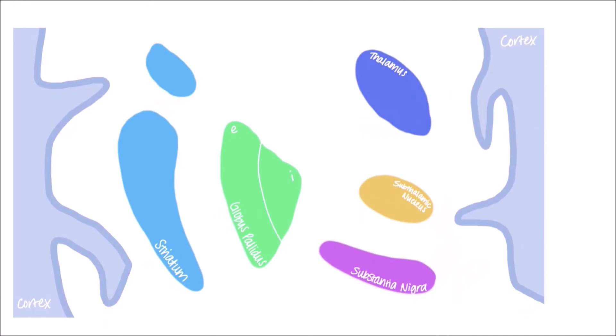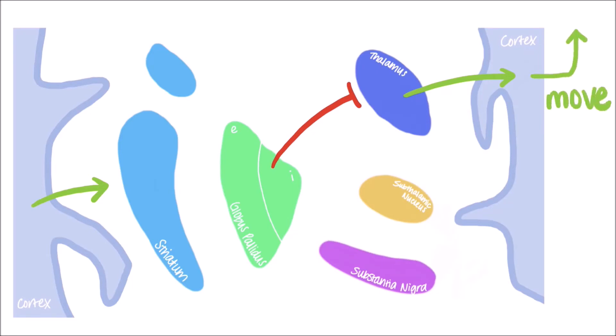I have zoomed into one side of the brain and slightly rearranged the locations of these structures so that it is easier to visualize the pathways. First, let's look at what the two pathways have in common. The cortex is going to excite the striatum in both instances, and the internal globus pallidus always inhibits the thalamus from sending excitatory impulses back to the cerebral cortex. Excitation of the cerebral cortex promotes movement.